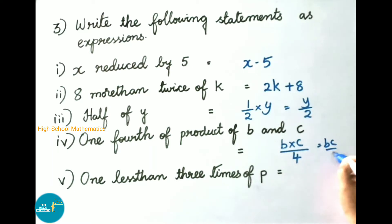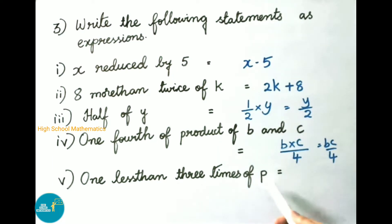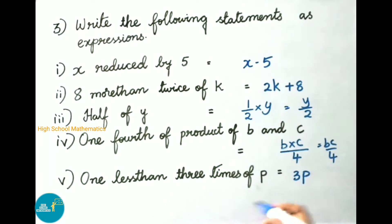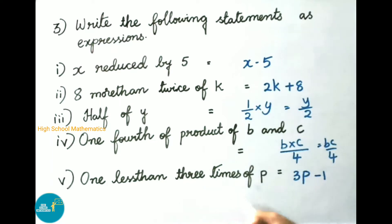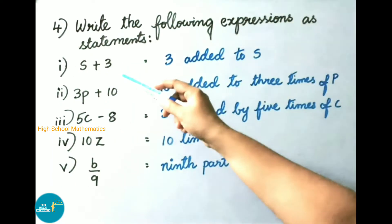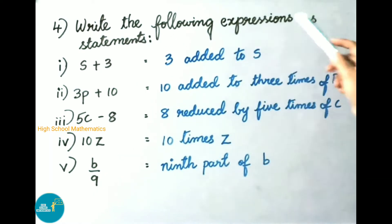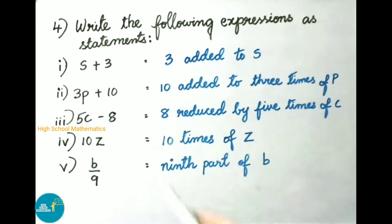Fifth, 'one less than three times of p' — three times of p is 3p, one less than means minus 1, so the answer is 3p minus 1. Question four: write the following expressions as statements.